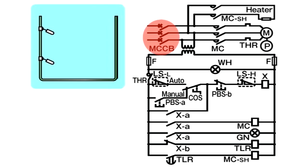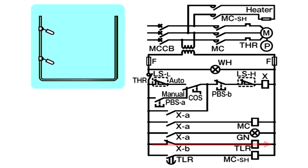The MCC-B is turned on. As voltage is applied to the sequence circuit through the transformer, the white lamp WH illuminates, current is passed through XB, exciting the coil of the on-delay timer TLR. TLR's relay operates if no operation is carried out from the time of execution until a set time has elapsed.